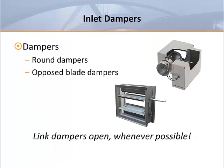Most terminal units use dampers to regulate primary air flow. The two common types of dampers found in terminal units are round or rectangular. Rectangular dampers can be single-blade or multi-blade. Multi-blade dampers are sometimes built with opposed blades. They are all suitable for use on terminal units, but round dampers have the advantage of lower cost, lower leakage, and simplicity. Multi-blade dampers tend to have higher cost, higher leakage, and more moving parts. Some people tout the linear response of the opposed blade damper as a control advantage, but that really hasn't been true since pneumatic controls were largely replaced by digital controls.